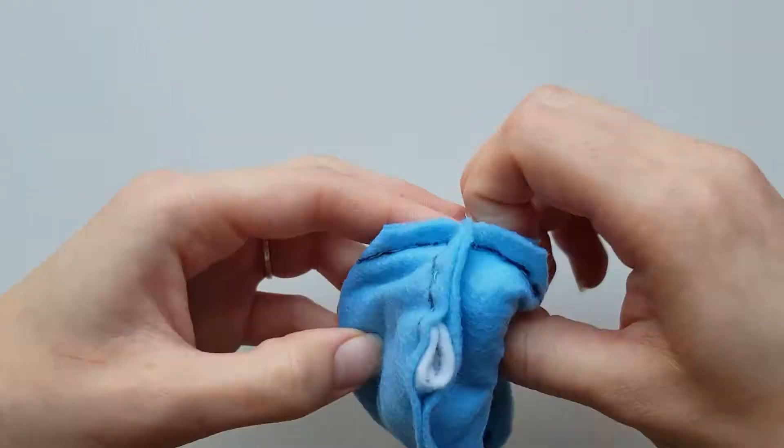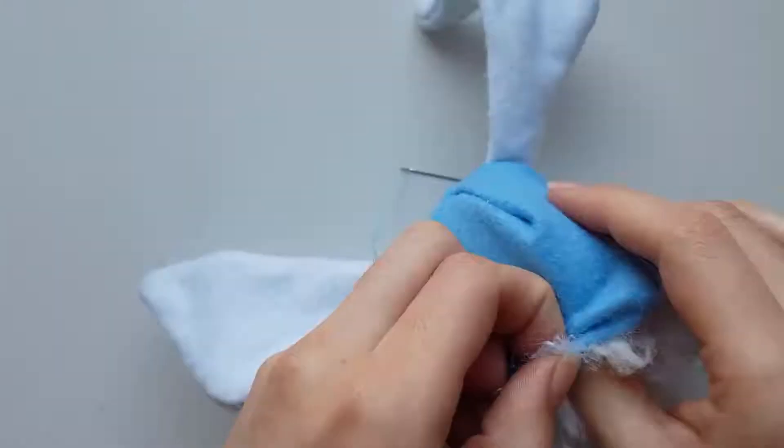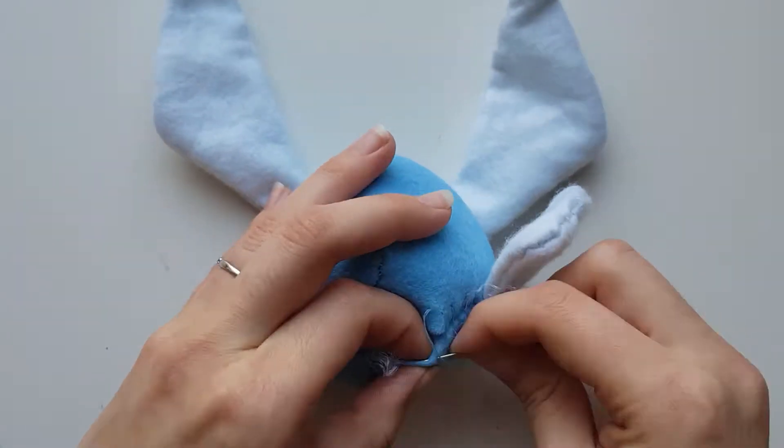Once you've almost reached the end of the sewing line, flip the plush the right way up and stuff it. Finally close off the gap with an invisible stitch.